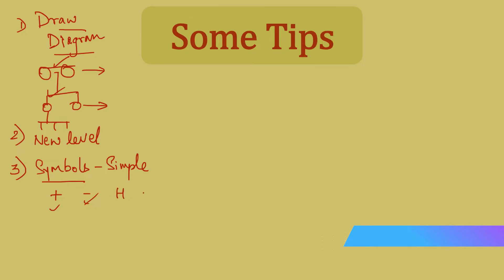For a husband and wife, we can use a dash to show they are married together. If they have children, you can show them like this. For example, these people have two children — a boy and a girl. A boy is male so plus, a girl is female so minus.